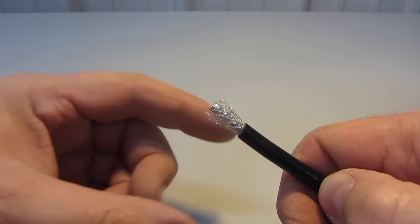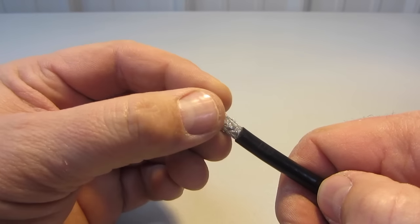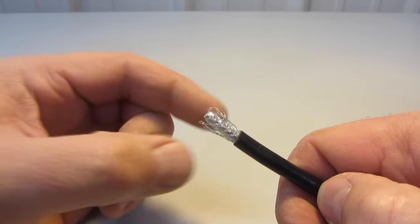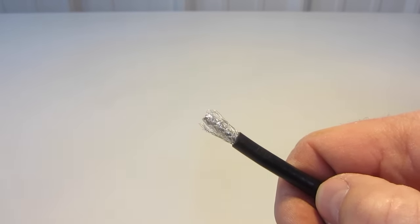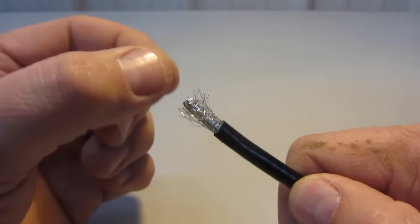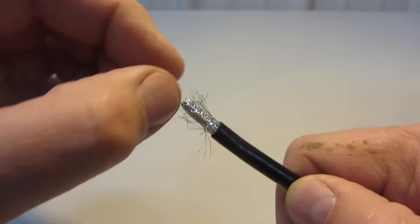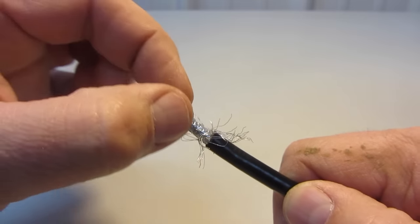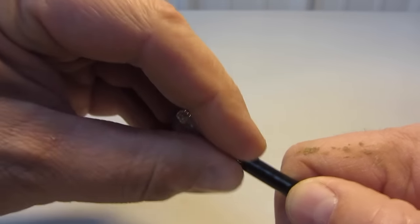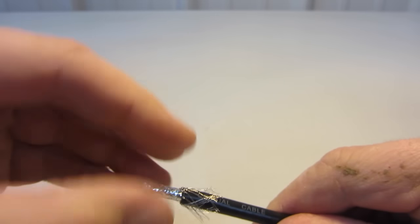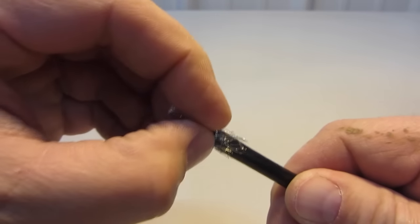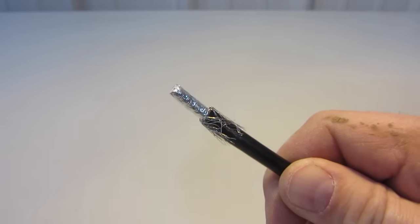I have now exposed the braided shield, which are these fine wires you see surrounding this tip. I will now simply peel back these wires all the way around, just like that.